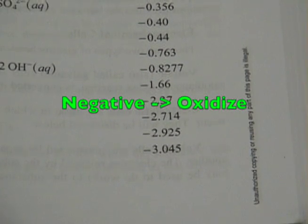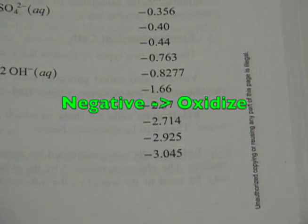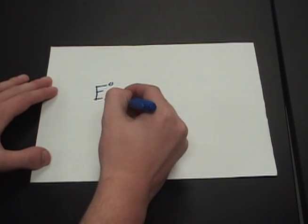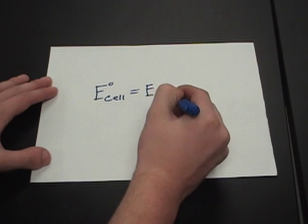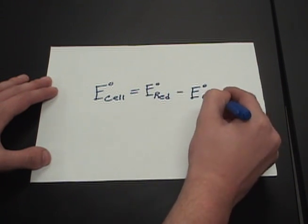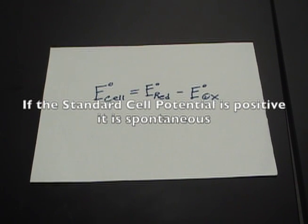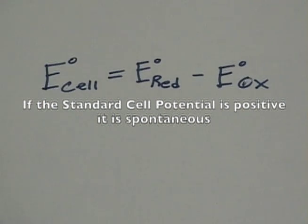And the more negative the cell potential, the more likely it's going to oxidize. The standard cell potential is found by subtracting the reduction cell potential by the oxidation cell potential. If the standard cell potential is positive, the reaction is spontaneous.